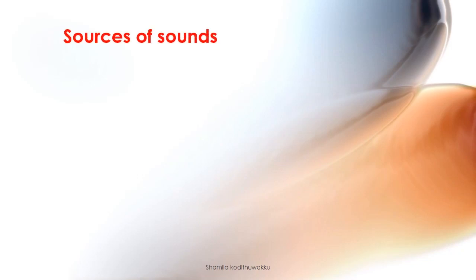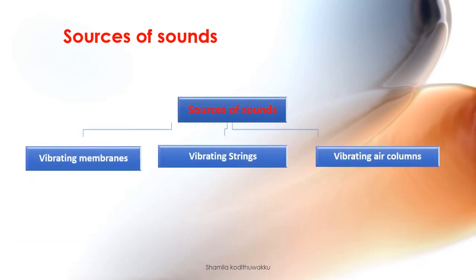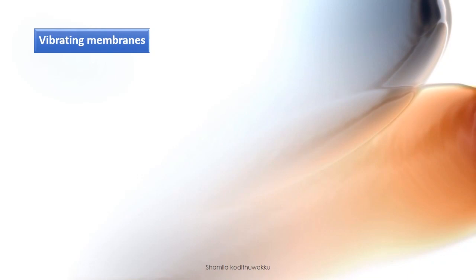Sources of sound can be divided into three categories according to the parts that vibrate when producing sound: vibrating membrane, vibrating spring, and vibrating air columns. Examples of instruments that produce sounds by vibrating membranes include the drum.